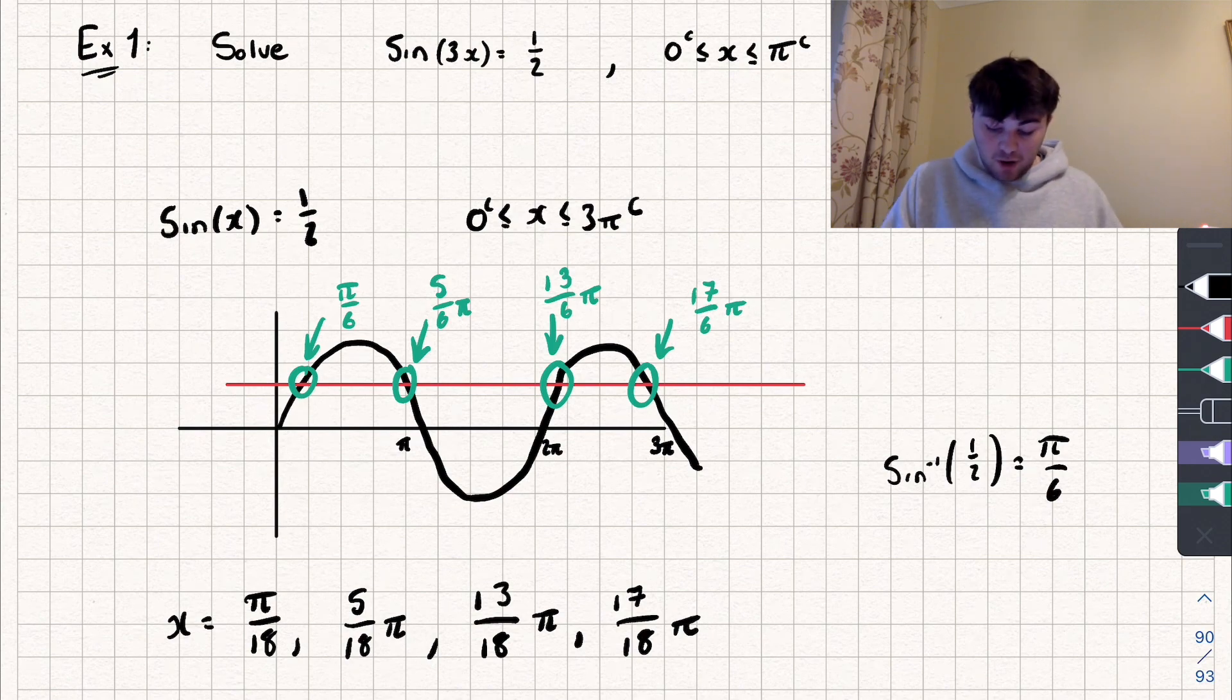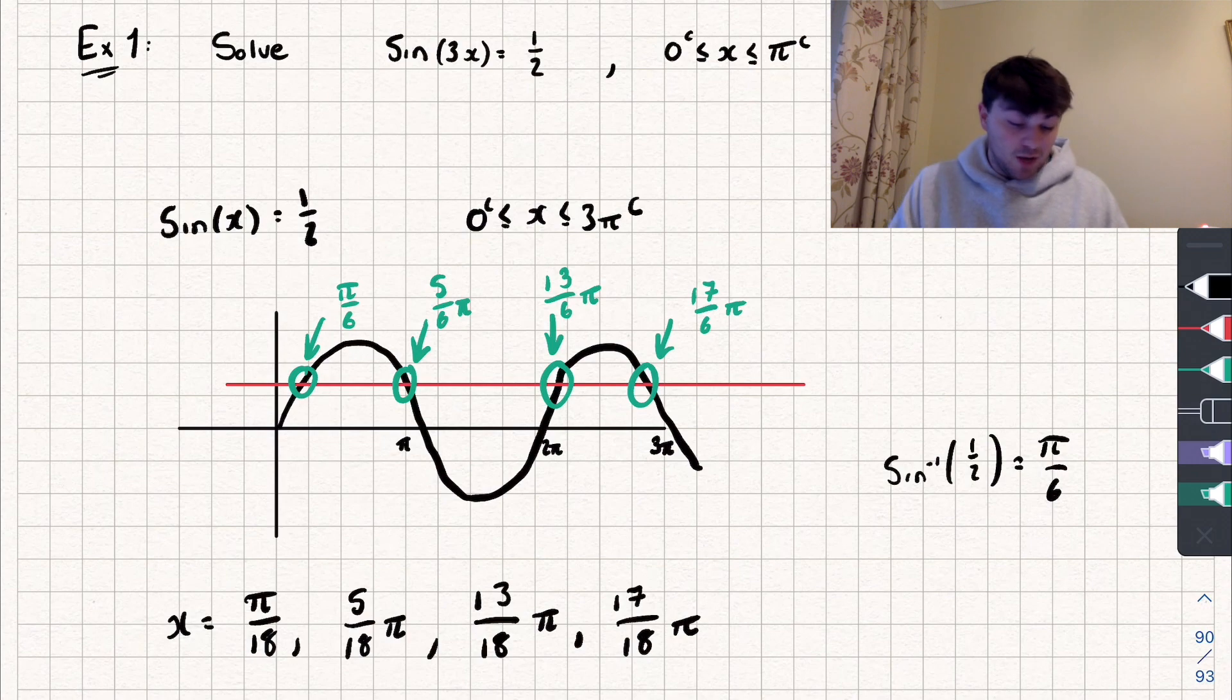And if you want to check that this is correct, you can just substitute them in. So we could put sine of 3 multiplied by 17 over 18 pi, and we get an answer of a half. So we could go through and check all of them and make sure that our answers make sense. So hopefully this was a useful video. If it was, like, subscribe and share, and go over to my channel for tons more maths tutorials. Thanks for watching.